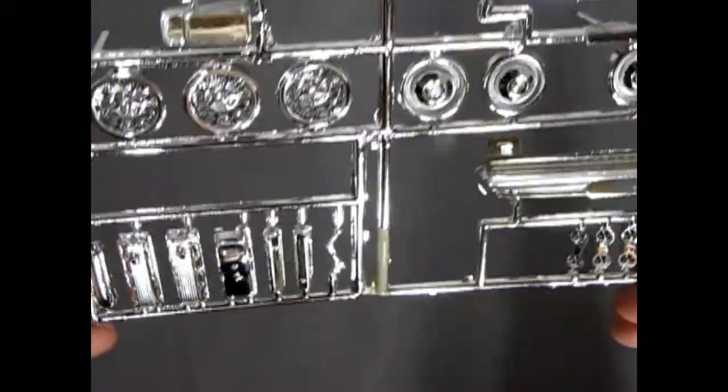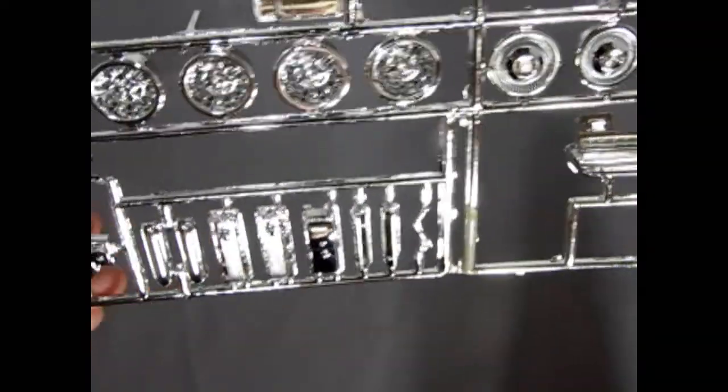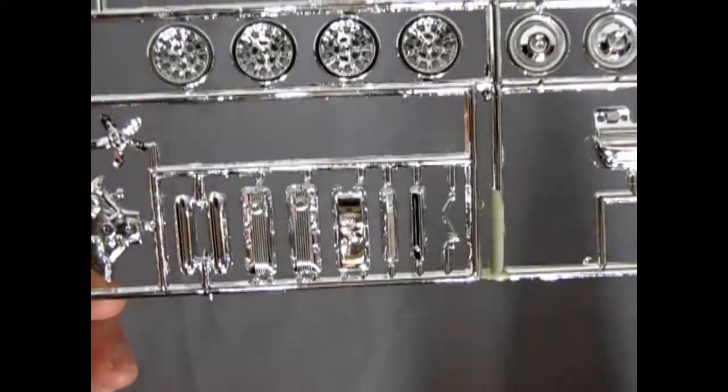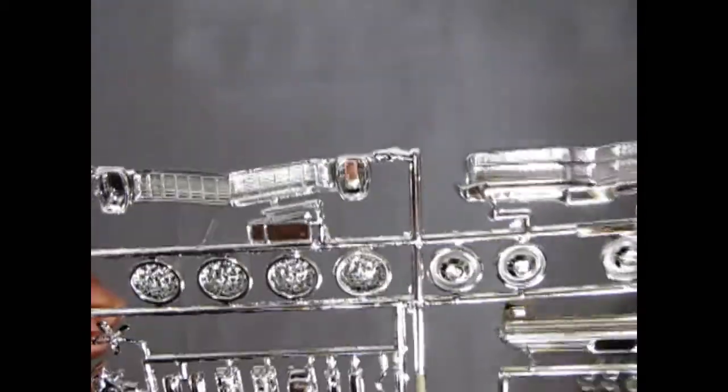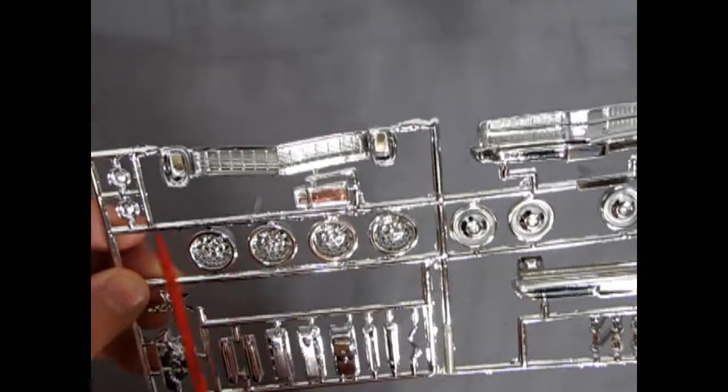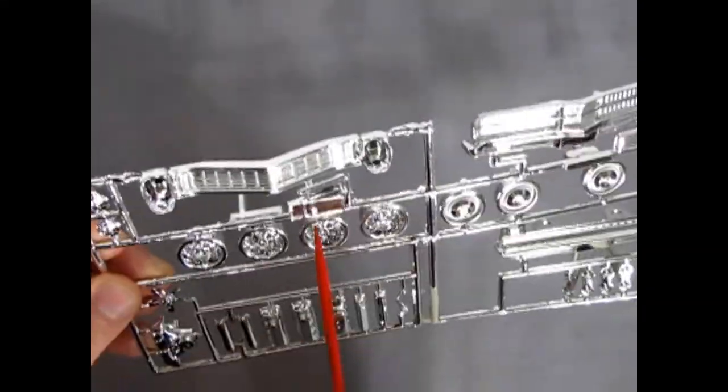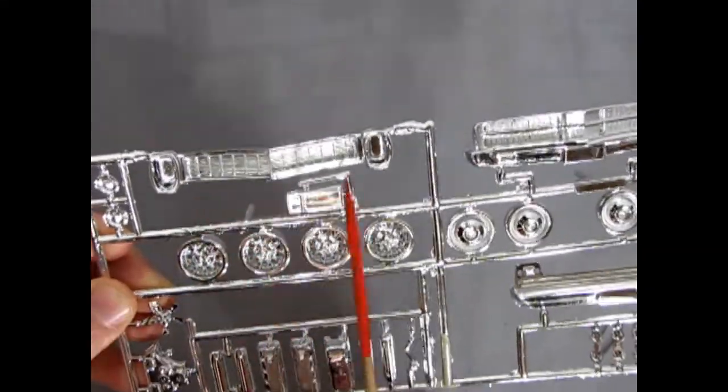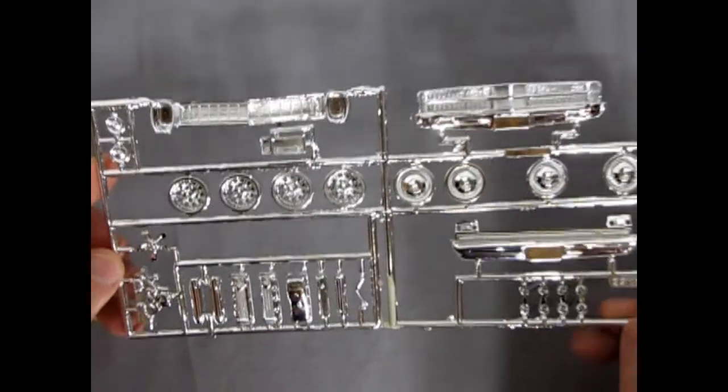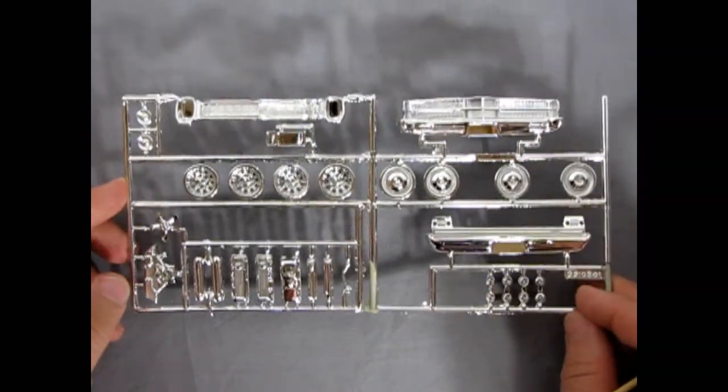I'm not sure what those little bits are. Oh, they're probably bumperettes or something for a custom version. Now, I don't think this whole thing here. And the chrome console here. I don't think any of this was in the instruction sheet. However, it is pretty cool nonetheless.